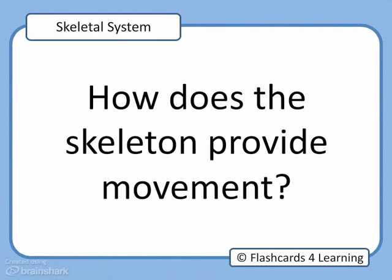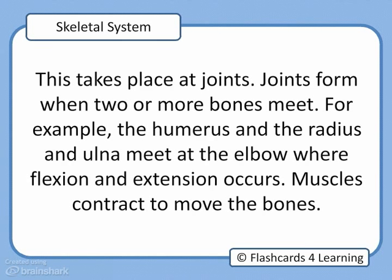How does the skeleton provide movement? This takes place at joints. Joints form when two or more bones meet. For example, the humerus and the radius and ulna meet at the elbow, where flexion and extension occurs. Muscles contract to move the bones.